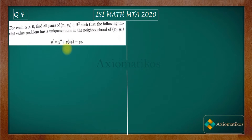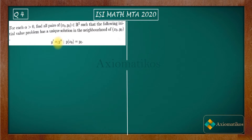We have an initial value problem and we have to find x₀ and y₀ such that for each alpha greater than zero we have a unique solution. Before starting, I should introduce Picard's theorem. Picard's theorem gives us the guarantee for the existence and uniqueness of our initial value problem.